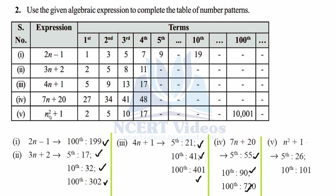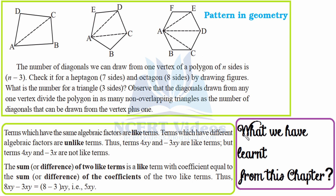For the last expression n² + 1, we need to find the 5th and 10th terms only, as the 100th is already given. For the 5th term: 5² + 1 = 25 + 1 = 26. For the 10th term: 10² + 1 = 100 + 1 = 101. This completes the second part of the exercise.